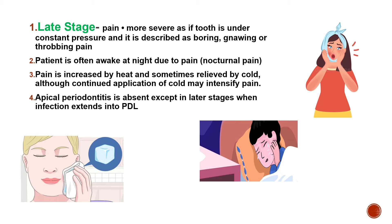Another late stage symptom is that pain is increased by heat and sometimes relieved by cold, although continuous application of cold may also increase the pain. Apical periodontitis is absent except in the later stage when the infection extends into the PDL (periodontal ligament). If symptoms persist for a very long time, inflammation can reach the peri-apex, resulting in apical periodontitis.